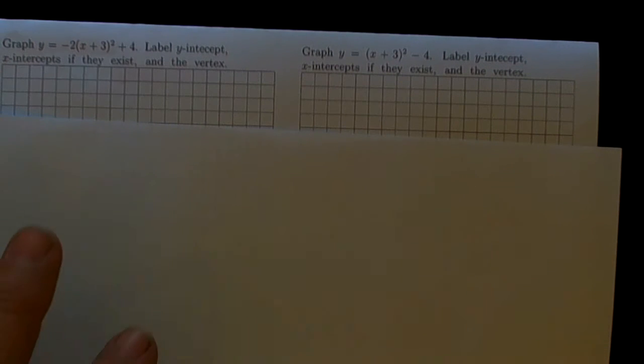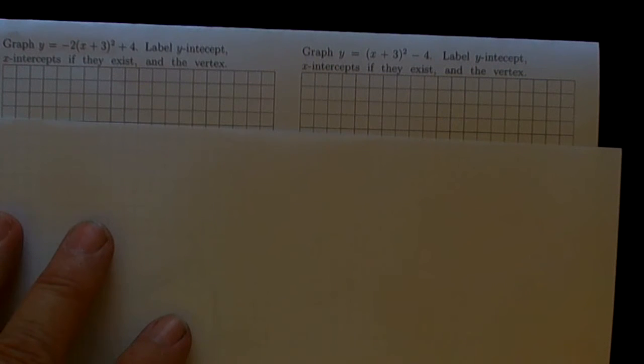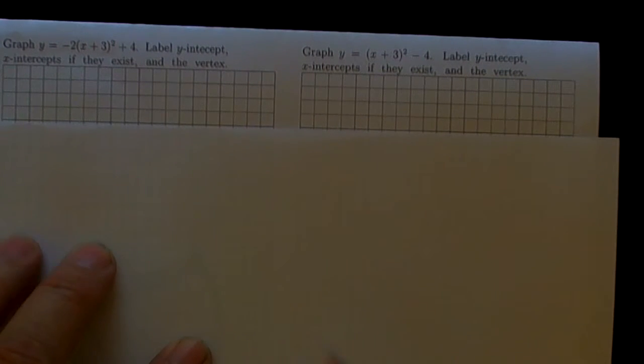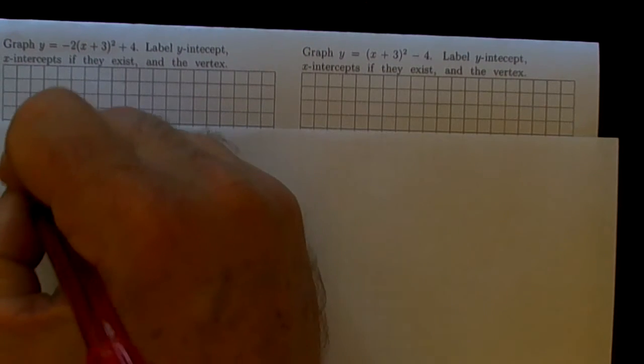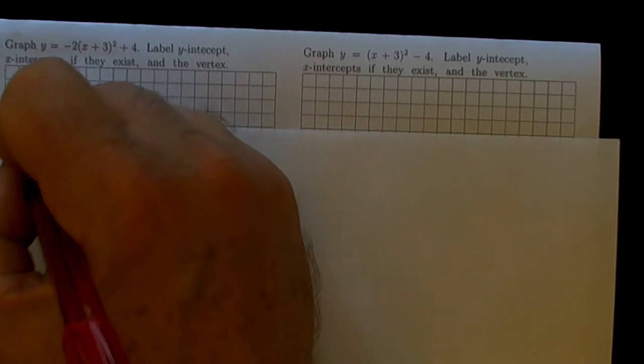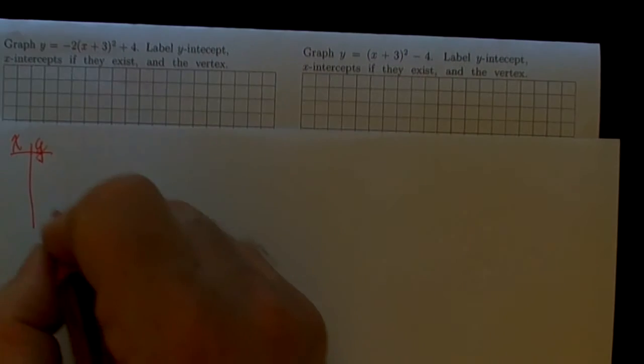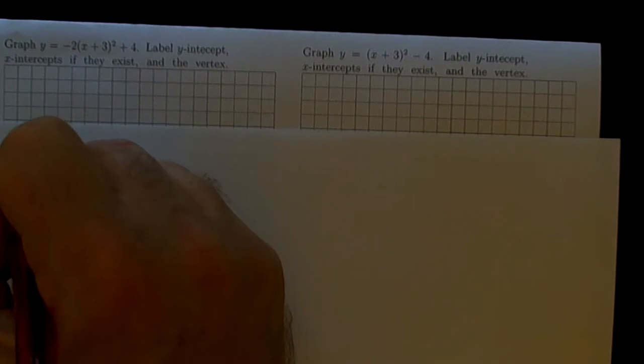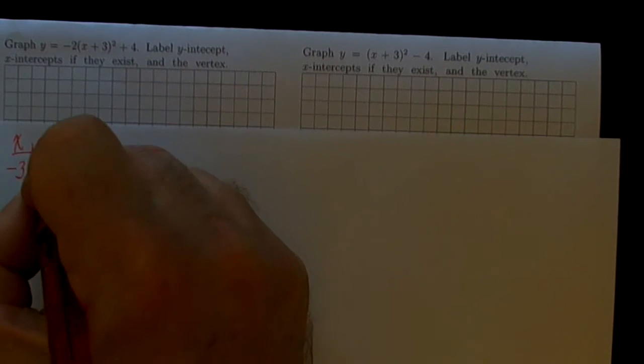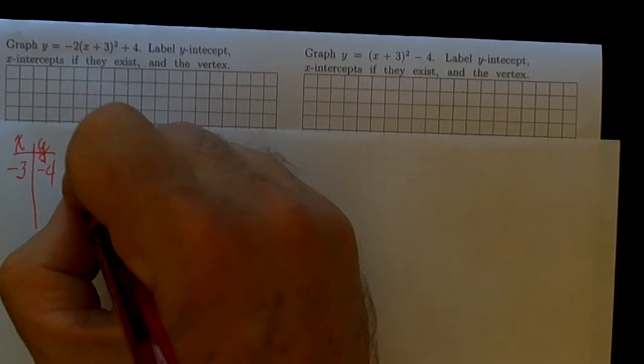Let's begin with the things that we can readily see just from the form of the equation. Because it is in vertex form, we know that (-3, -4) is the vertex.